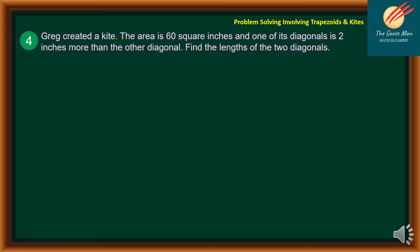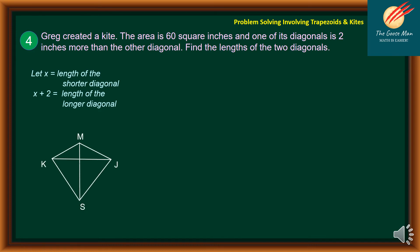On Problem Number 4, let's move on to kites. Greg created a kite. The area is 60 square inches, and one of its diagonals is 2 inches more than the other diagonal. Find the length of the two diagonals. We will represent X as the length of the shorter diagonal, and X plus 2 as the length of the longer diagonal. The area formula is diagonal 1 times diagonal 2 divided by 2. The area is equal to 60 square inches. Diagonal 1 is equal to X and diagonal 2 is equal to X plus 2.